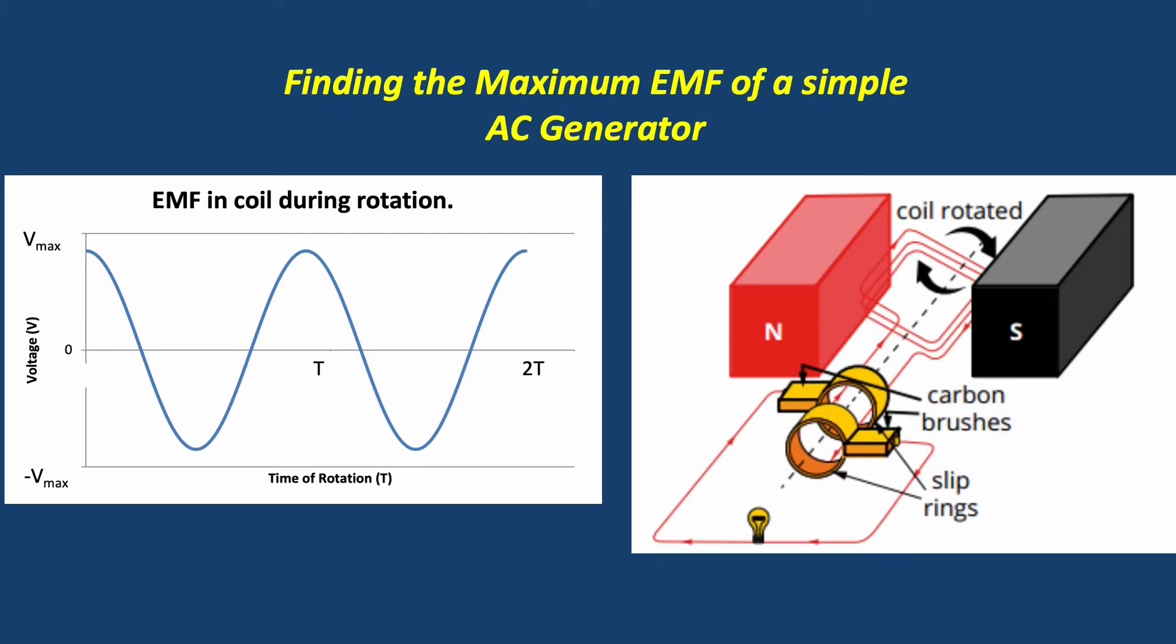When we think of the coil as having two leads, those leads will each only ever touch one of the slip rings. That one slip ring will therefore cycle between positive Vmax and negative Vmax.